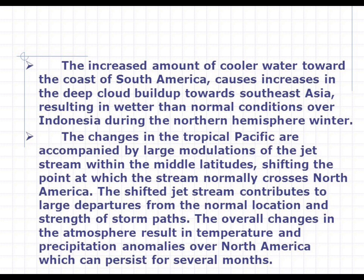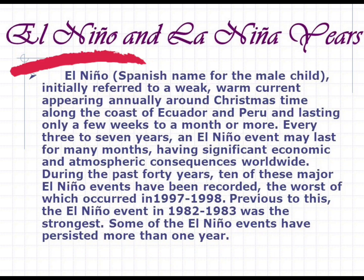The increased amount of cooler water toward the coast of South America causes increases in deep cloud buildup towards Southeast Asia, resulting in wetter than normal conditions over Indonesia during the northern hemisphere winter. The changes in the tropical Pacific are accompanied by large modulations of the jet stream within the middle latitudes, shifting the point at which the stream normally crosses North America. The shifted jet stream contributes to large departures from normal storm path locations and strengths, resulting in temperature and precipitation anomalies over North America that can persist for several months.